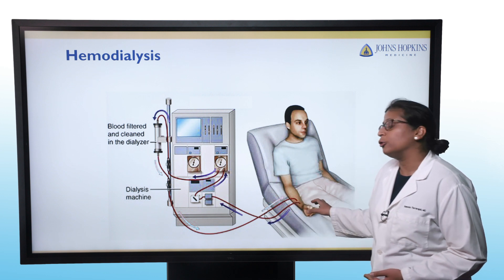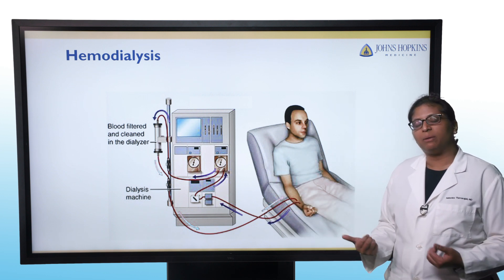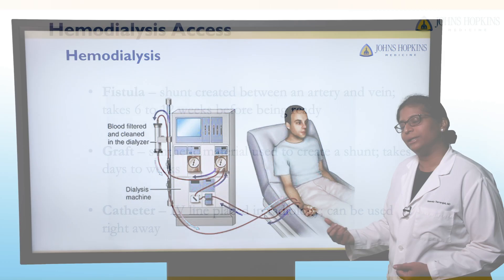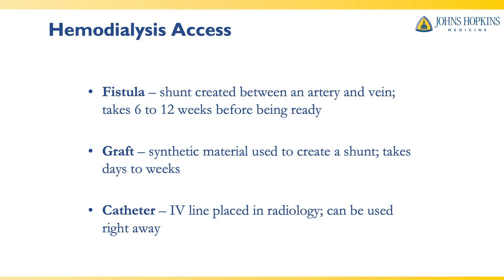We're going to talk about the three types of hemodialysis access. First, there's the fistula, which is a shunt created between your own artery and your own vein — there's no artificial material in it. This procedure is performed by a vascular surgeon. It takes about 6 to 12 weeks before it's ready to use. The procedure itself is a same-day outpatient procedure and often doesn't even need to be done under general anesthesia.